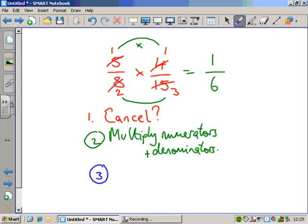the third and final step should be to ask yourself, can I simplify? And if you've done all the cancelling that you could have done in step one, then the answer should be no. But it's always worth asking yourself just in case to see whether or not you've missed something. Three easy steps to multiply fractions.